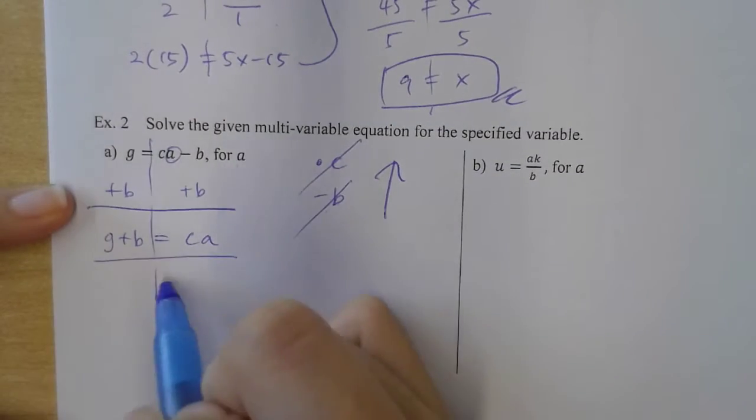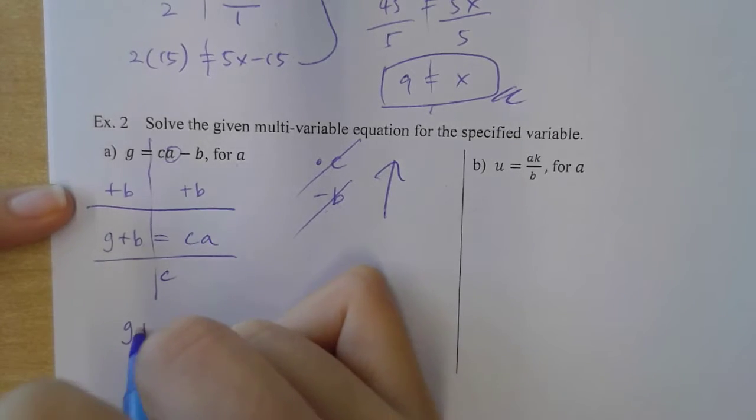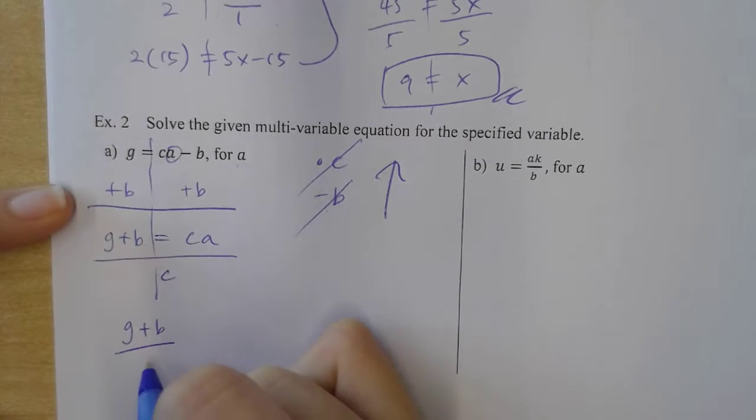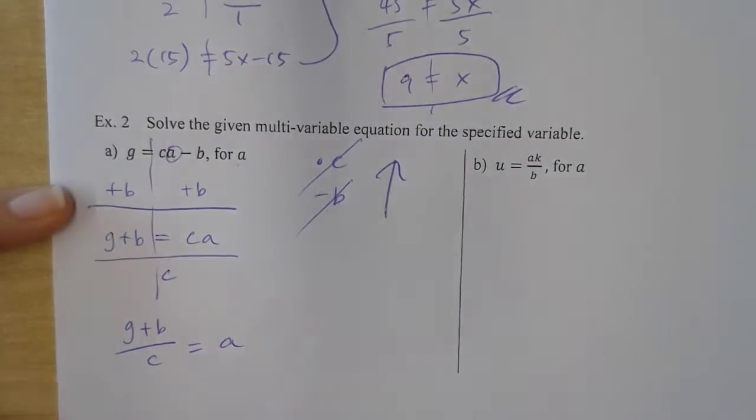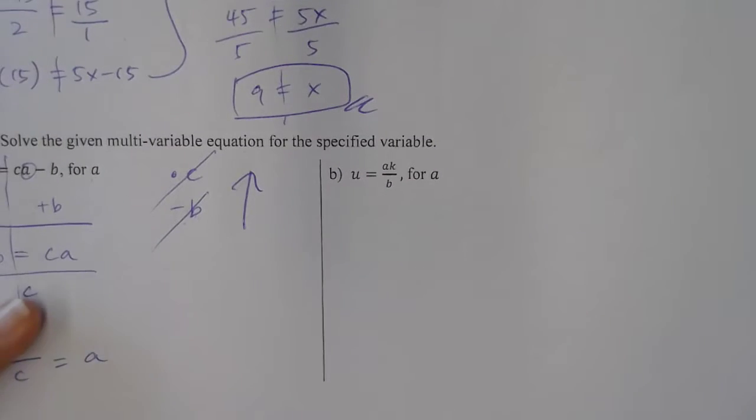You divide both sides by C. Again, these are... I cannot simplify it, okay? Because they're not numbers. We don't know if they like terms or not. They're not like terms. Facts. Okay? Because they're different variables. So you leave it like that. And then, my A is G plus B over C.